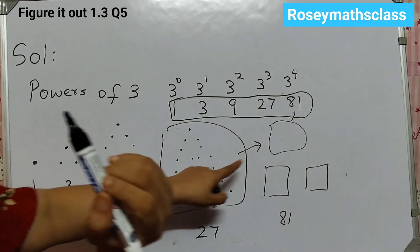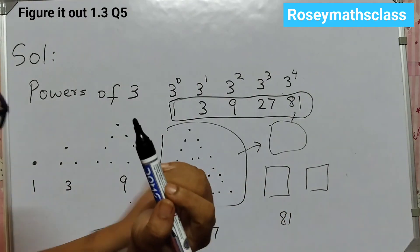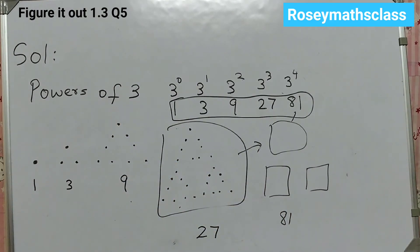So this will be 1. It is 27, 27, 27. So likewise you can show powers of 3. Hope this is clear to all. Thank you.